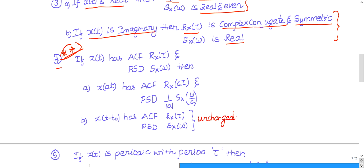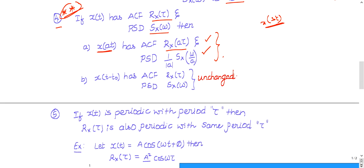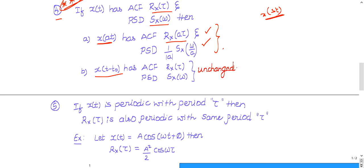Property 4 (important, asked in GATE): If x(t) has autocorrelation R_x(τ) and power spectral density S_x(ω), then for a scaled signal x(at) — for example x(3t) — the autocorrelation becomes R_x(aτ), e.g. R_x(3τ), and the power spectral density becomes (1/|a|)·S_x(ω/a).